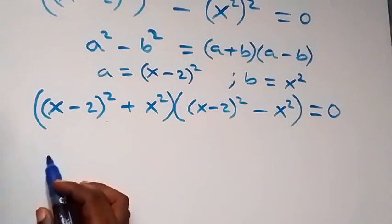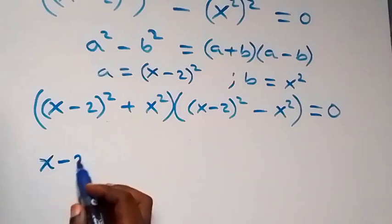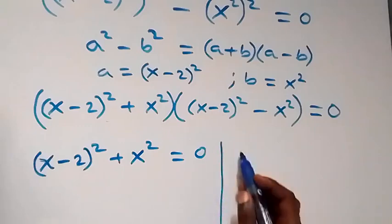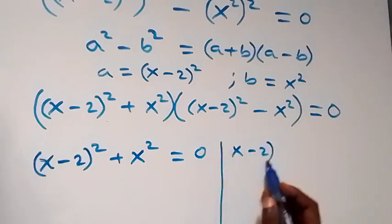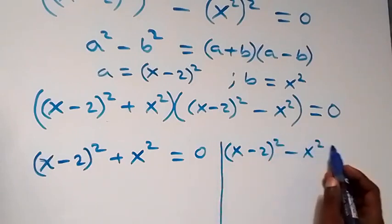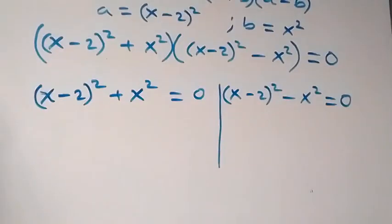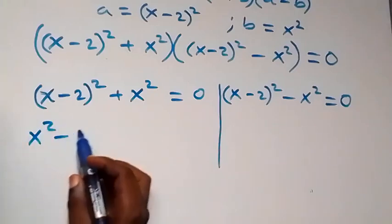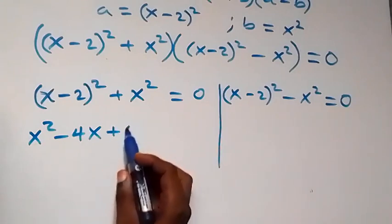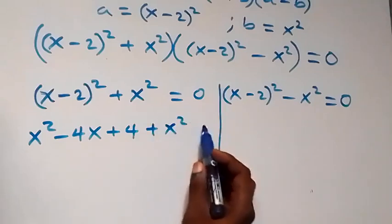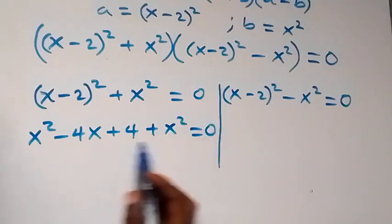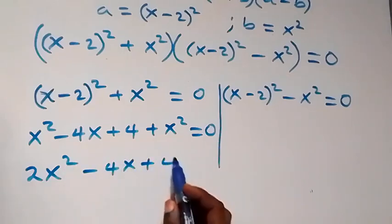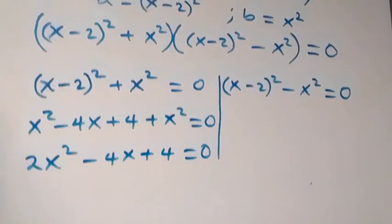Since the two brackets multiply to zero, either factor could be zero. The first case: (x minus 2) squared plus x squared equals zero. We expand: x squared minus 4x plus 4 plus x squared equals zero. So x squared plus x squared gives us 2x squared, meaning 2x squared minus 4x plus 4 equals zero.